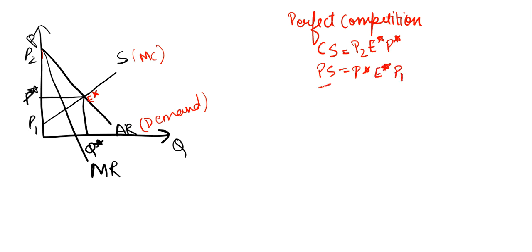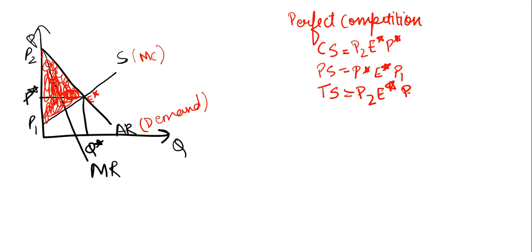Therefore, we can say our total surplus is this entire bigger triangle — the entire region P2, P star, and P1 — which represents our total surplus under perfect competition.